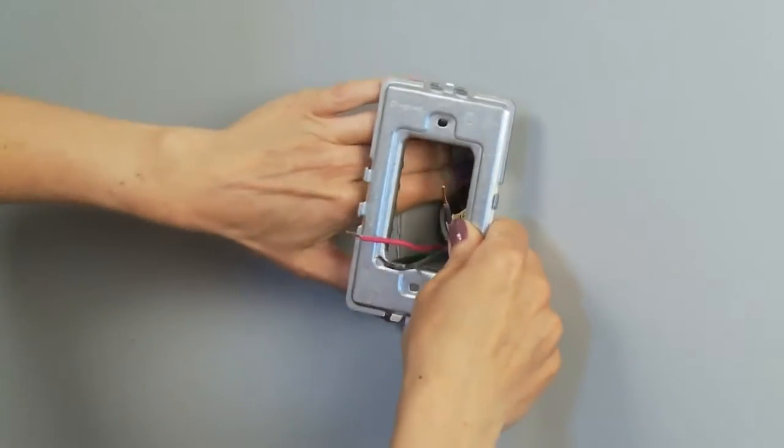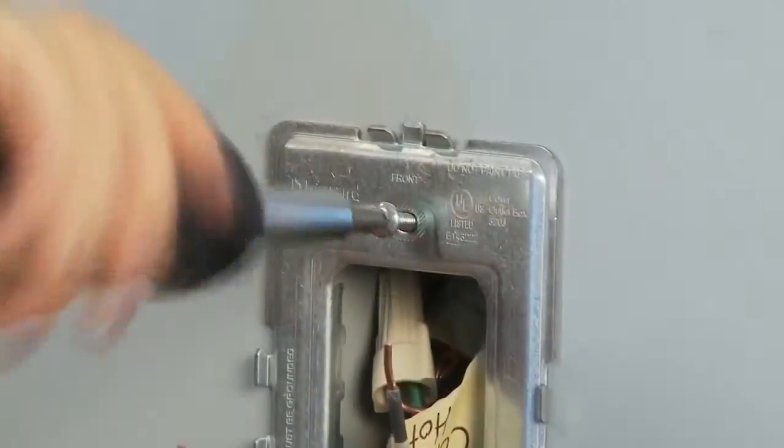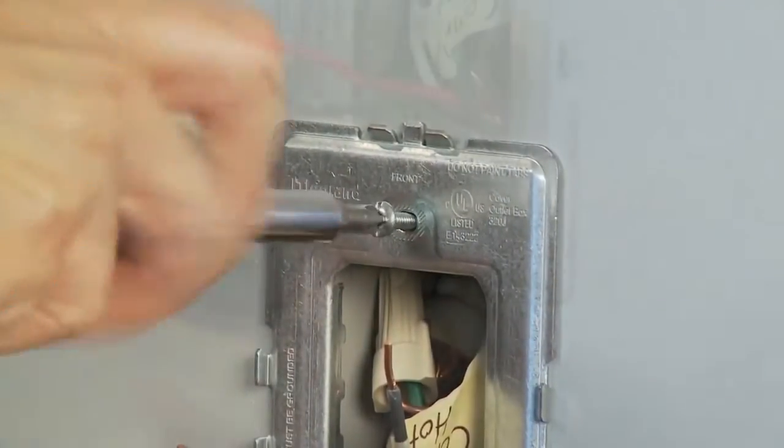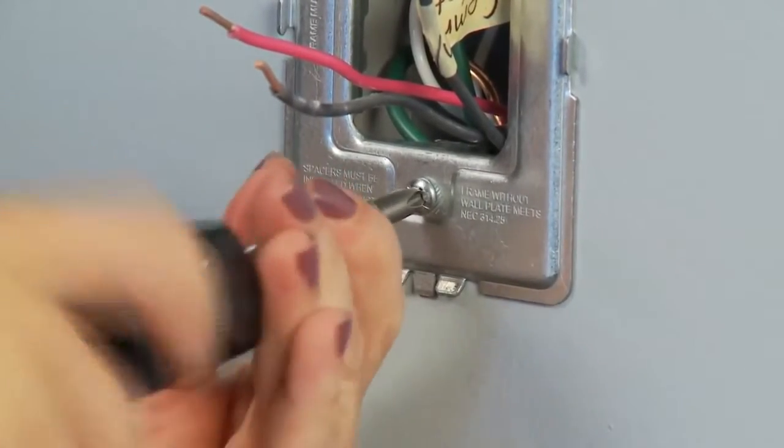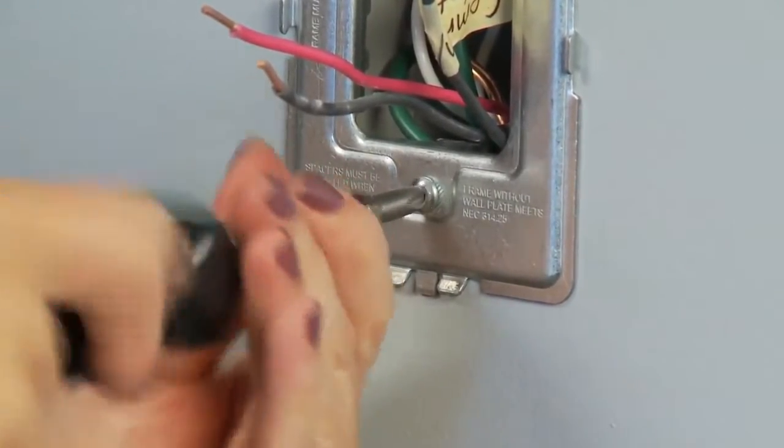Mount the frame to the wall box using the screws provided, taking care not to scratch or mar the surface of your wall. Tighten the screws tight enough to hold the frame onto the wall, but do not over-tighten.